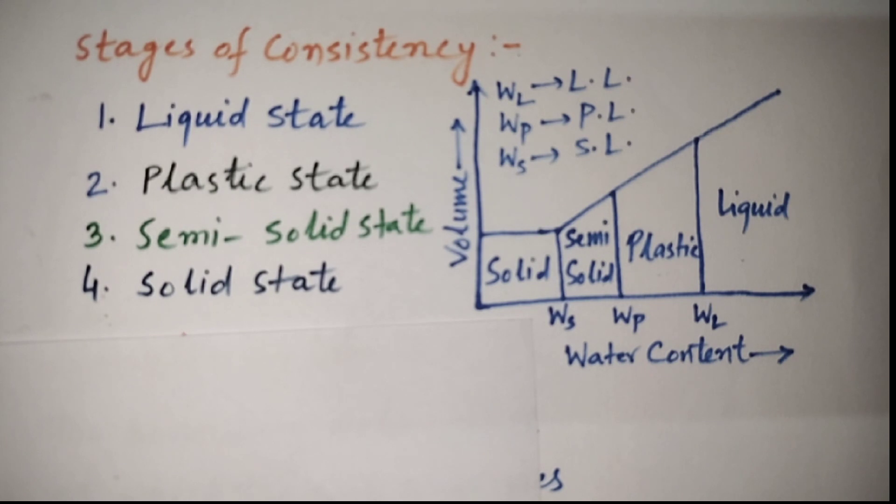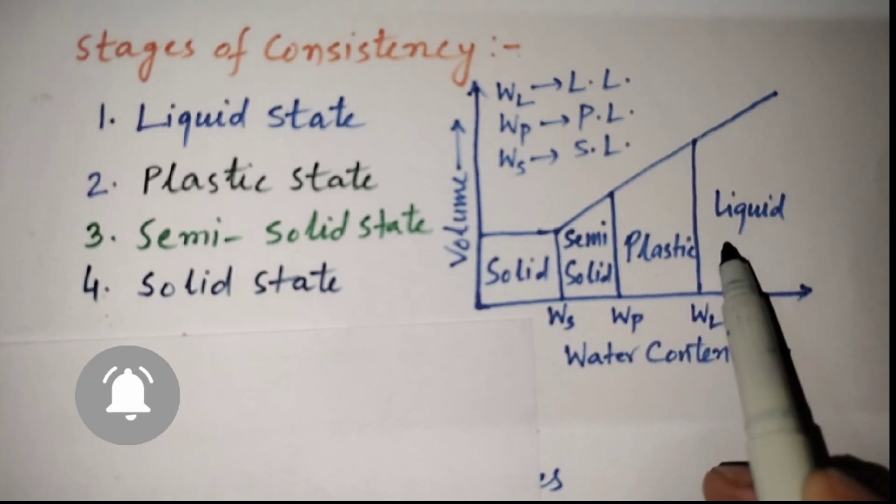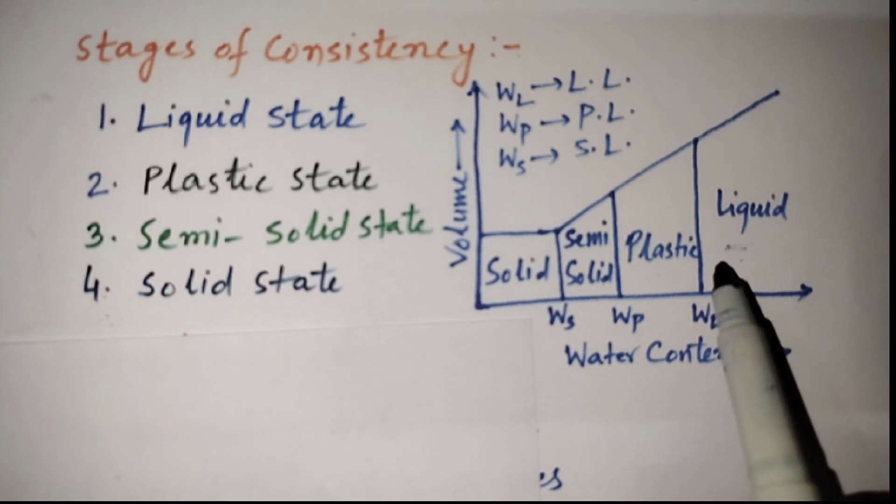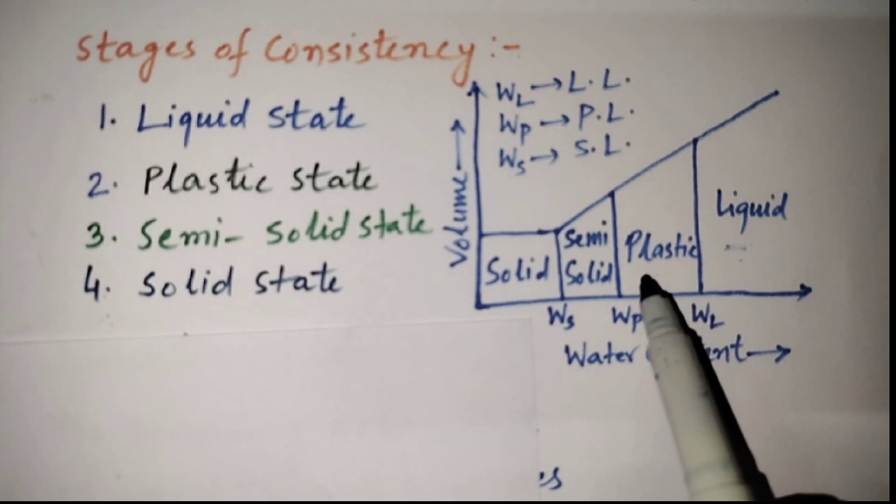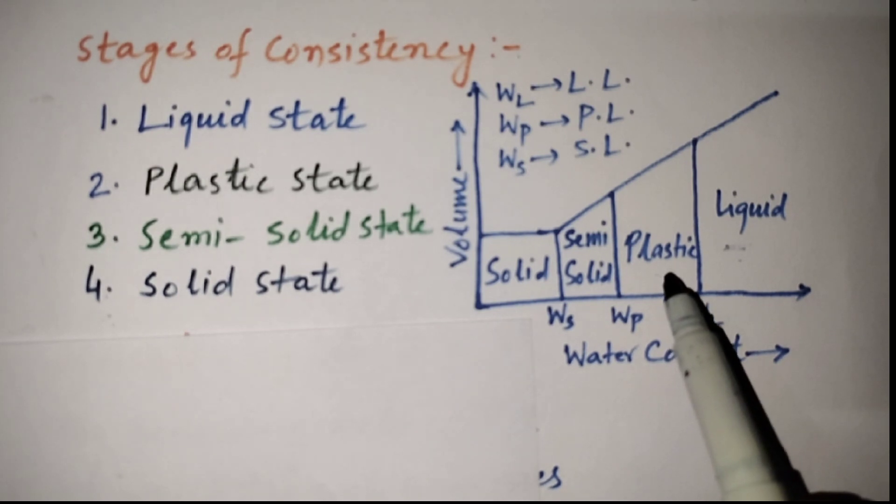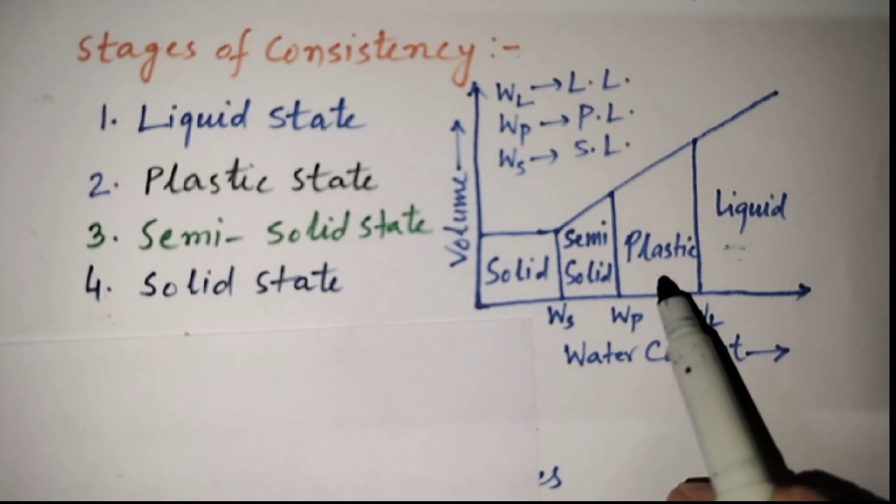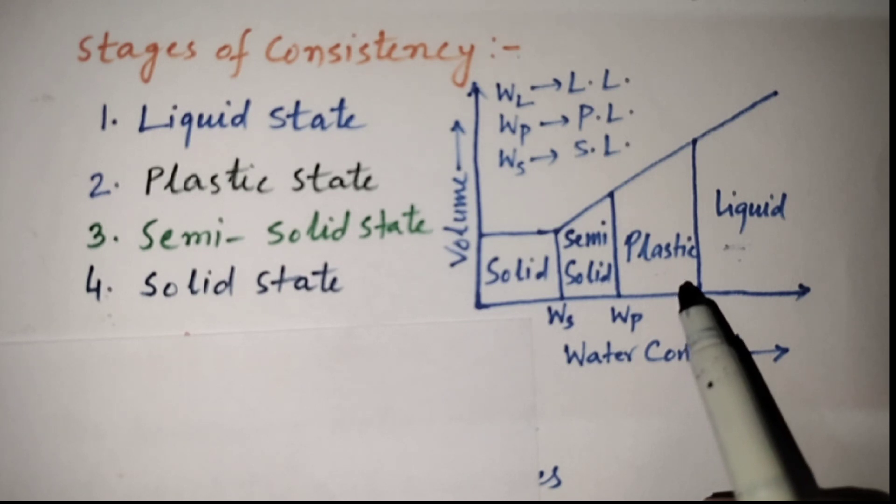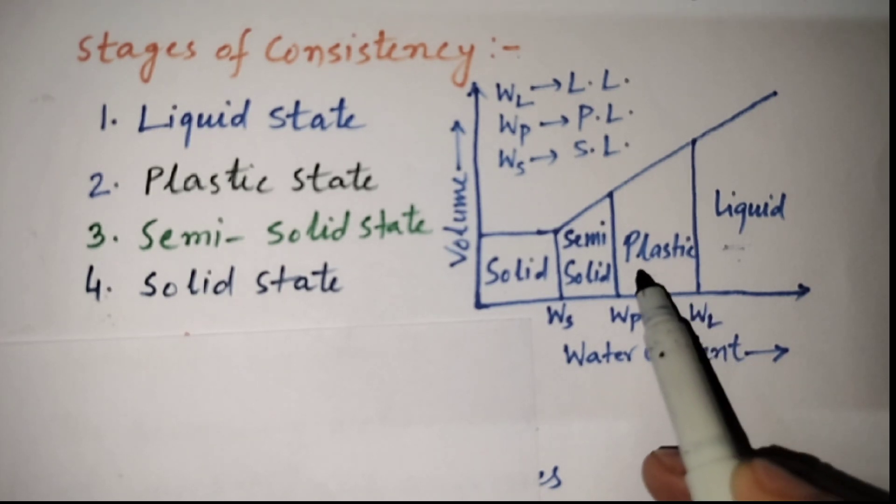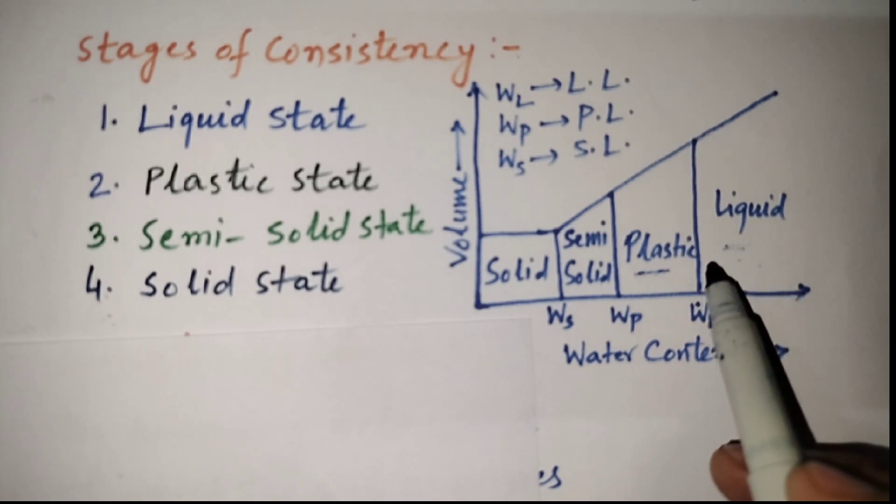When a fine grain soil is mixed thoroughly with a large quantity of water, the resulting suspension is in liquid state and offers practically no resistance to flow. In other words, the soil has virtually no strength. If the water content of the suspension is gradually reduced, keeping the consistency of the sample uniform, a stage comes when it just begins offering resistance to flow. This is the stage when the sample changes from possessing no shearing strength to having an infinitesimal shear strength and changes from the liquid to plastic state.